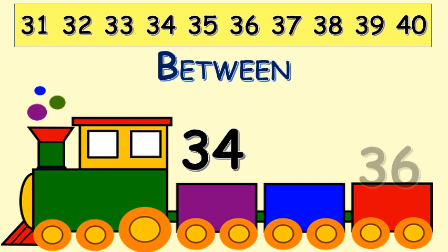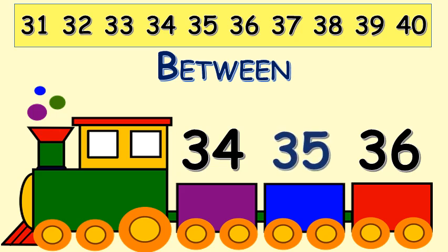Here we have numbers thirty-four and thirty-six. Can you find which number comes between thirty-four and thirty-six? Yes, it's thirty-five that comes between thirty-four and thirty-six.